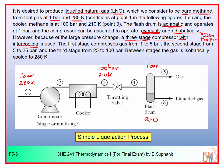The first stage compresses from 1 to 5 bar (pressure ratio 5×), the second stage from 5 to 25 bar (another 5×), and the third stage from 25 to 100 bar (about 4×). Between compression stages, the gas is isobarically cooled down to 280 Kelvin in intercoolers.